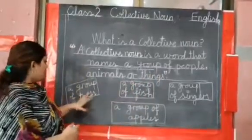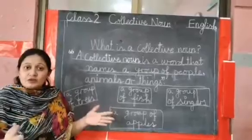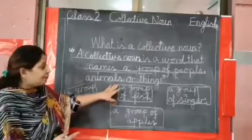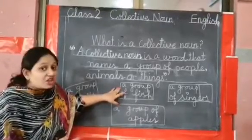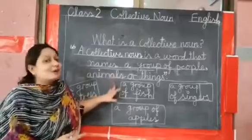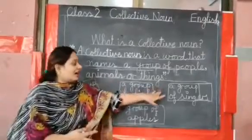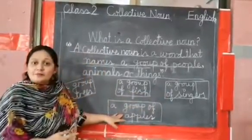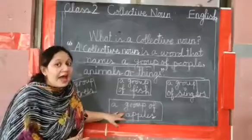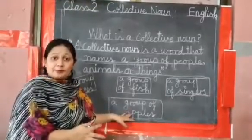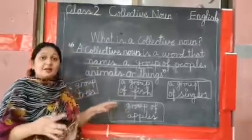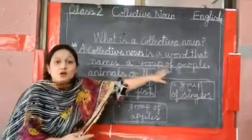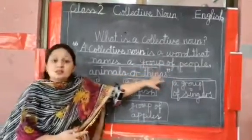For example, a group of trees — there are many trees together, so it's a group of trees. A group of fish. A group of singers. A group of apples. So there are many groups. A collective noun is a word that names a group of people, animals or things.